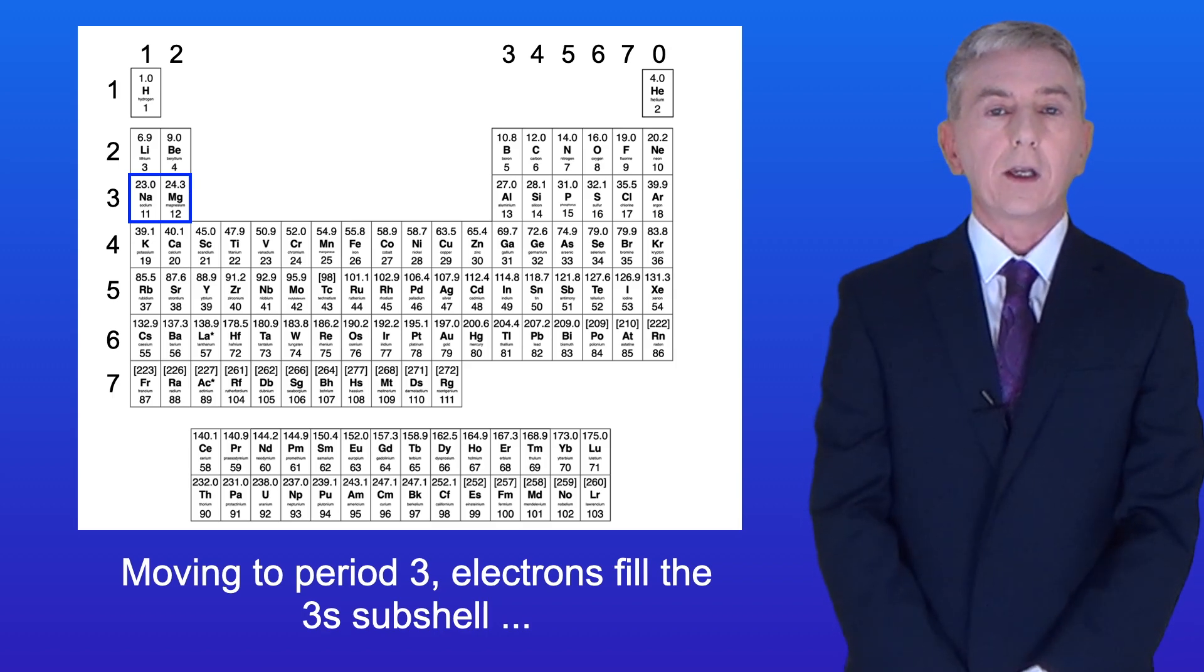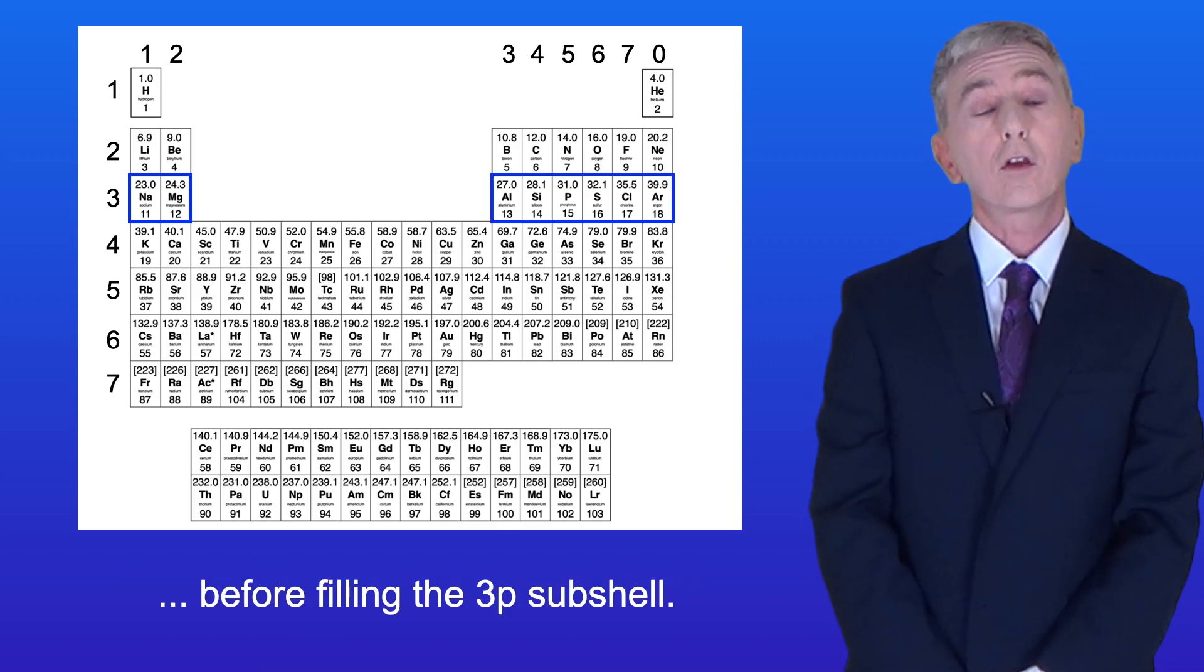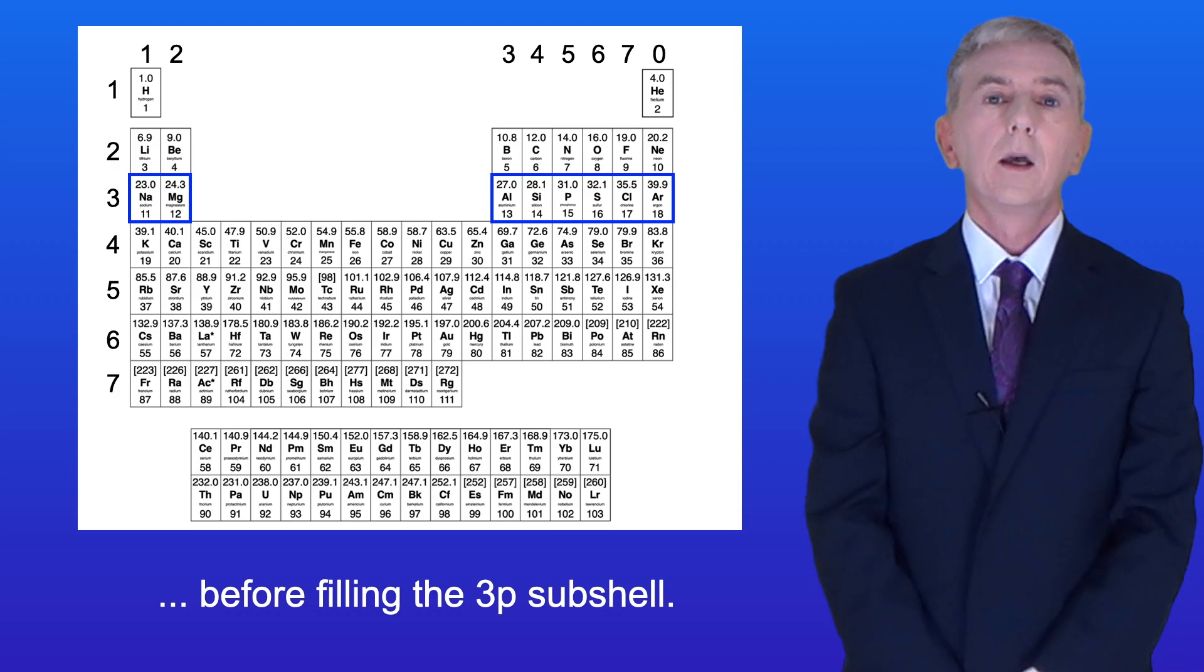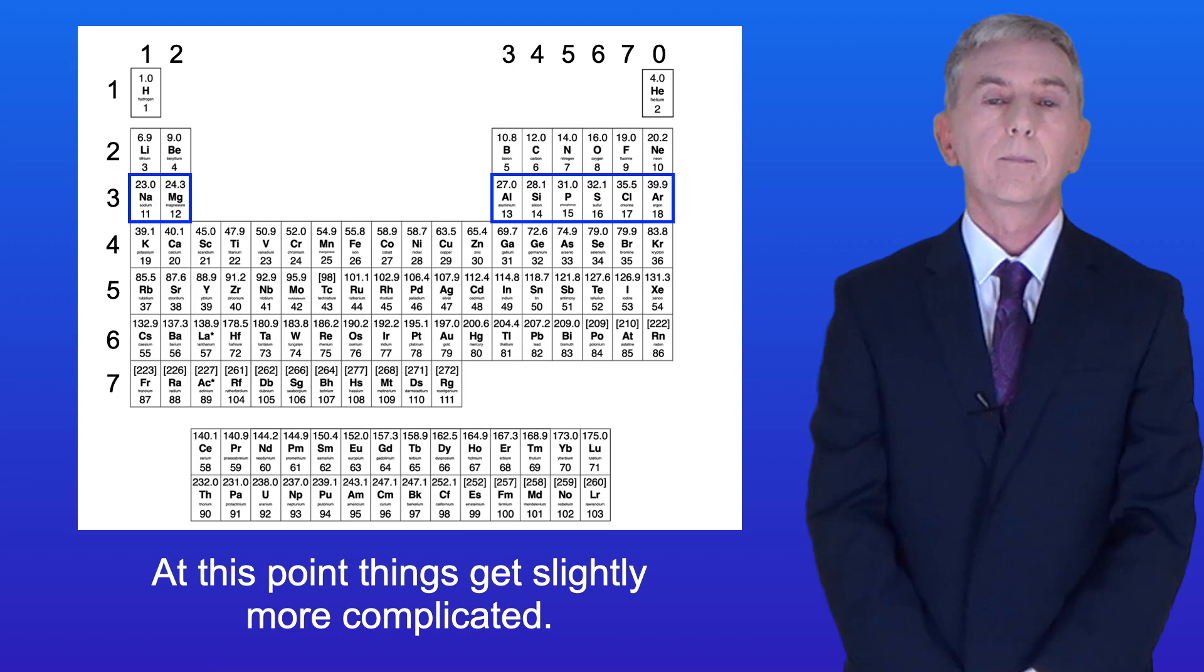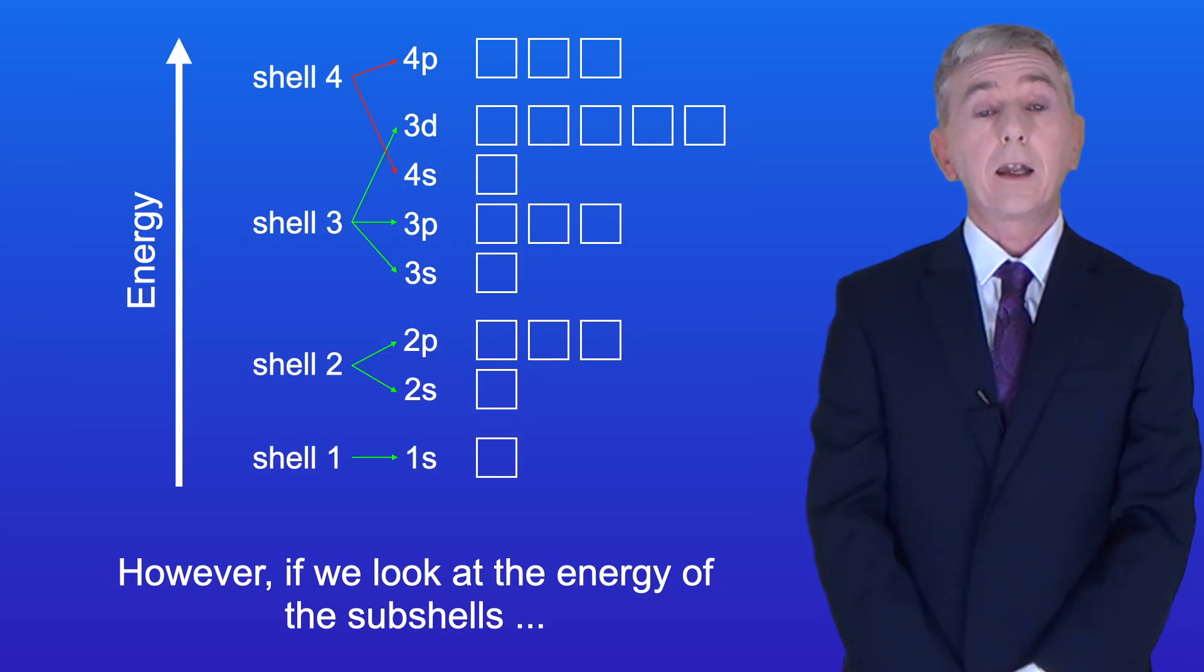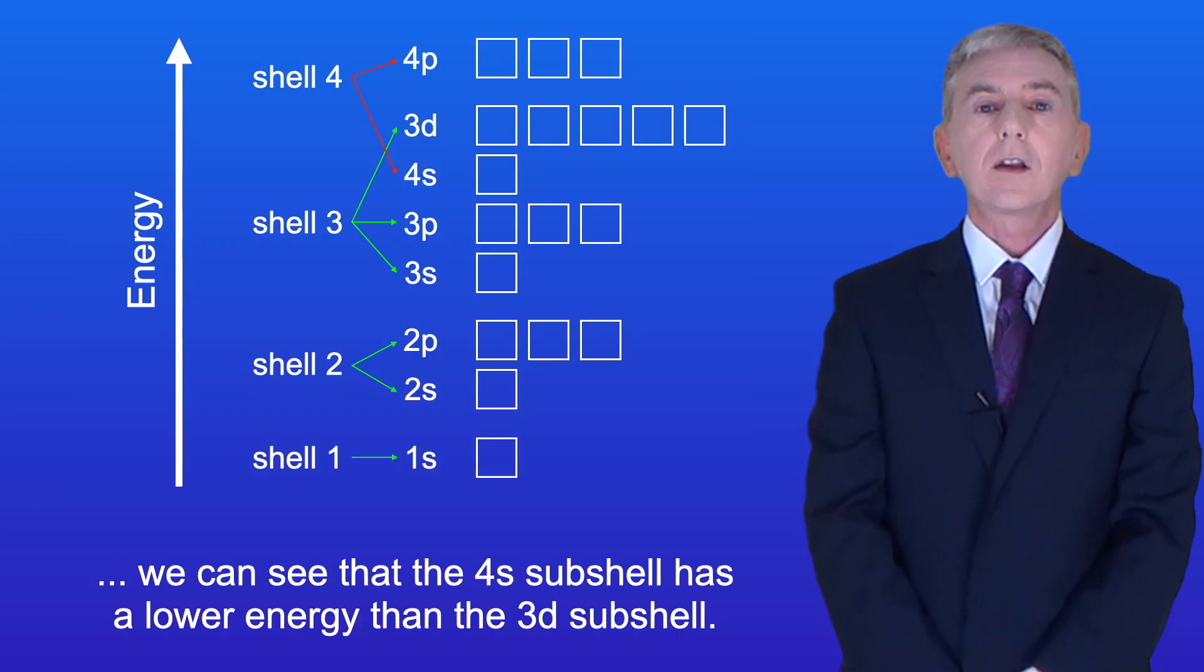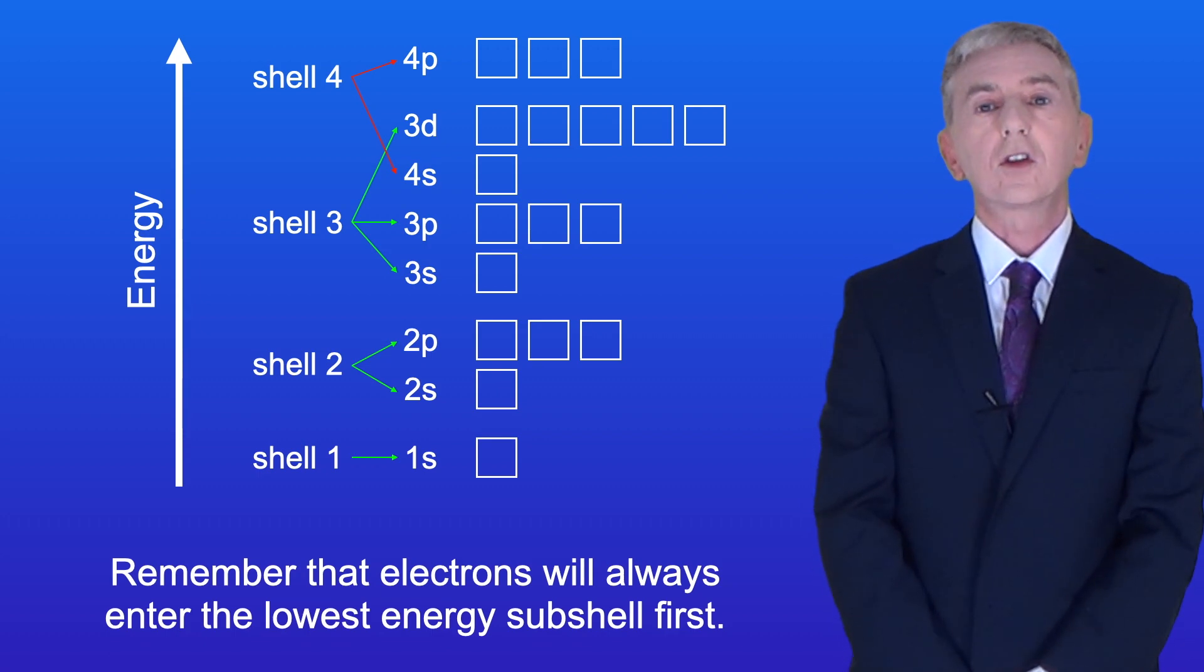Moving to period 3, electrons fill the 3s-subshell before filling the 3p-subshell. Now at this point, things get slightly more complicated. Shell 3 has the 3d-subshell, which can hold a maximum of 10 electrons. However, if we look at the energy of the subshells, we can see that the 4s-subshell has a lower energy than the 3d-subshell. Remember that electrons will always enter the lowest energy subshell first.